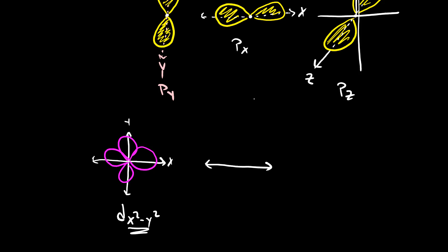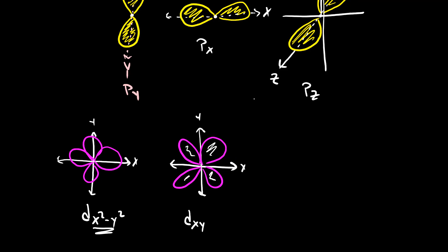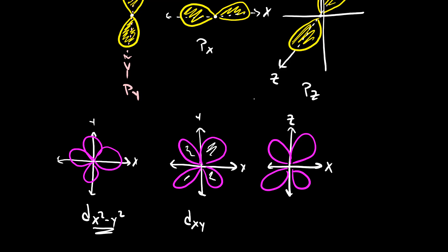There are three other D orbitals that have the same cloverleaf shape, but they lie between the axes. If this is the x and y axis, this orbital would be called the dxy — its lobes are positioned between the x and y coordinates. One lies between the x and z coordinate, called the dxz. There's also a dyz, which looks the same but is positioned between the y and z axes.